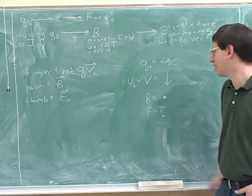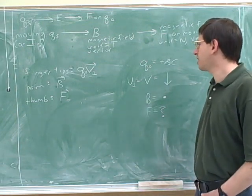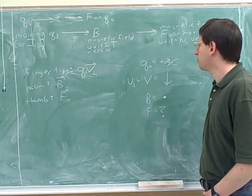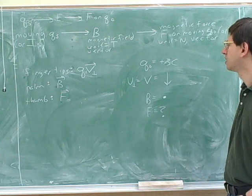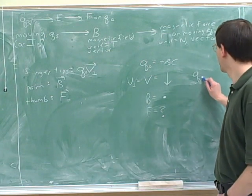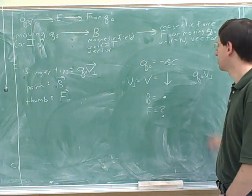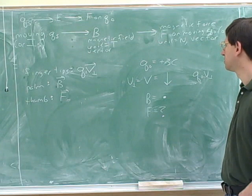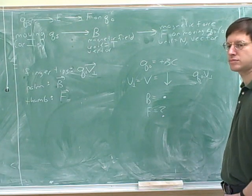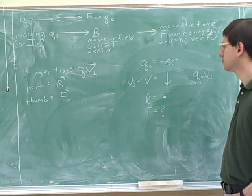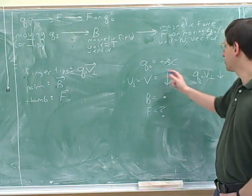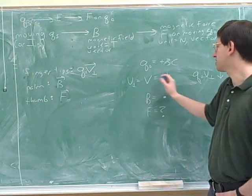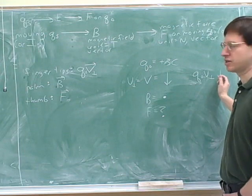That's going to be the case on most of your exam problems. We're still not ready for the right-hand rule — we need to write down q times v-perpendicular. So now we know that q times v-perpendicular is in the direction of v-perpendicular. What direction is that? Pointing down. When we multiply by a positive number, its direction doesn't change.